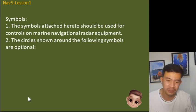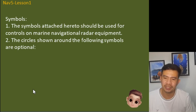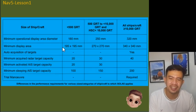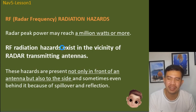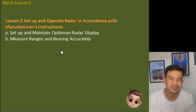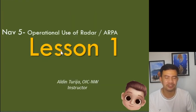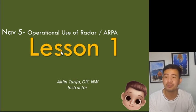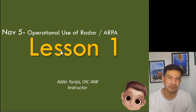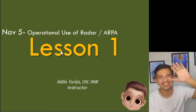There are also IMO symbols used for radar equipment and radar controls. This concludes Lesson 1 for NAV5 — the first part. Lesson 2 will continue with setting up and maintaining optimum radar display, and measuring ranges and bearings accurately. I hope you learned something. I wish you all the best — stay safe always, God bless, and thank you for watching.